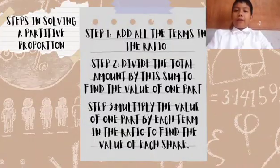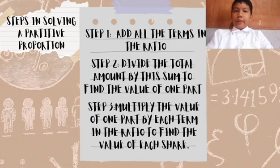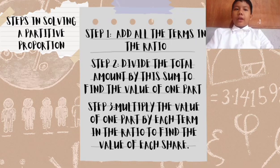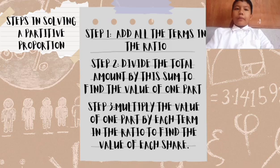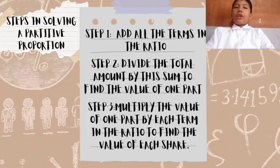Here are the steps in solving a partitive proportion. Step 1, add all the terms in the ratio. Step 2, divide the total amount by this sum to find the value of one part. Step 3, multiply the value of one part by each term in the ratio to find the value of each share.